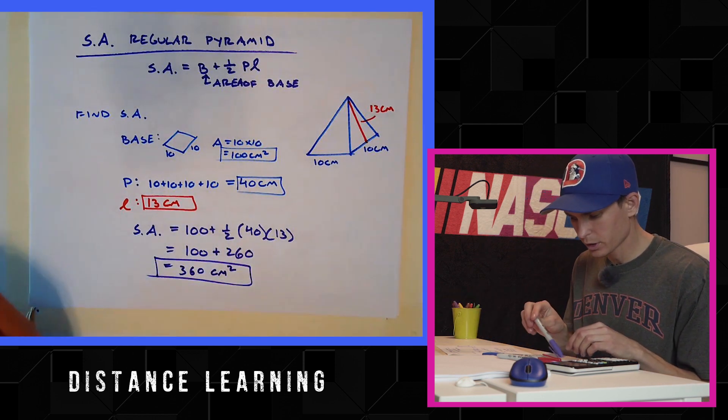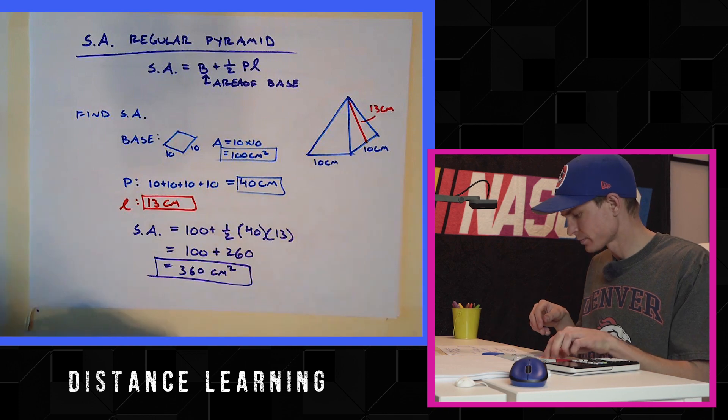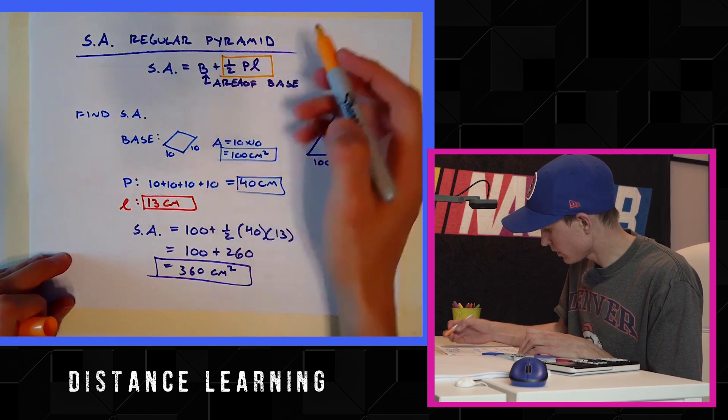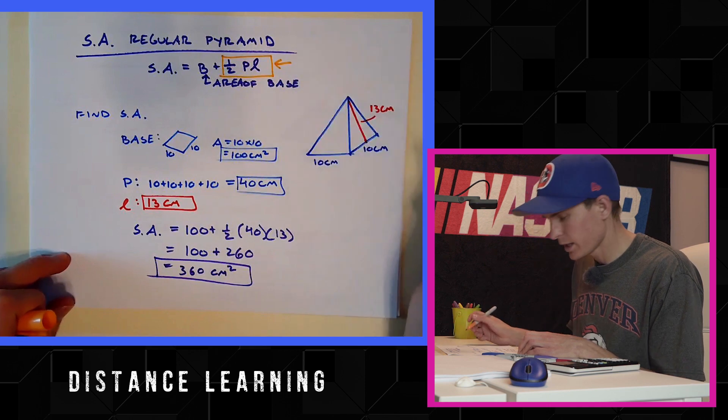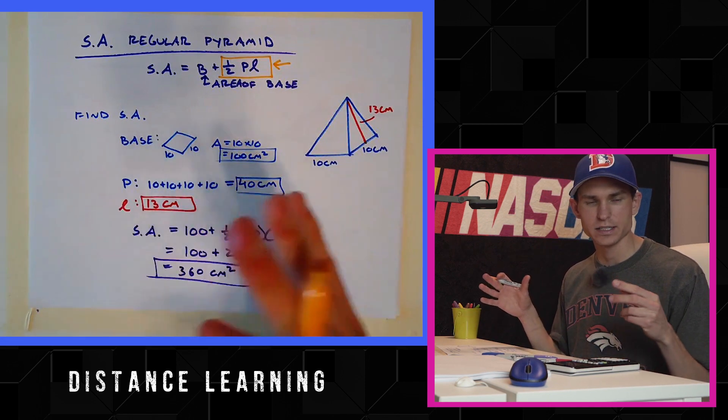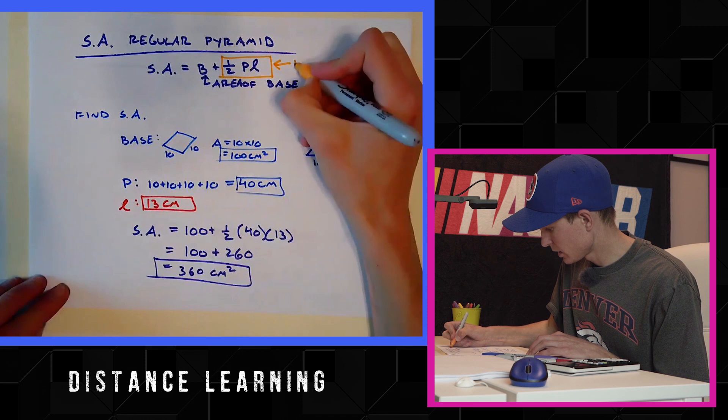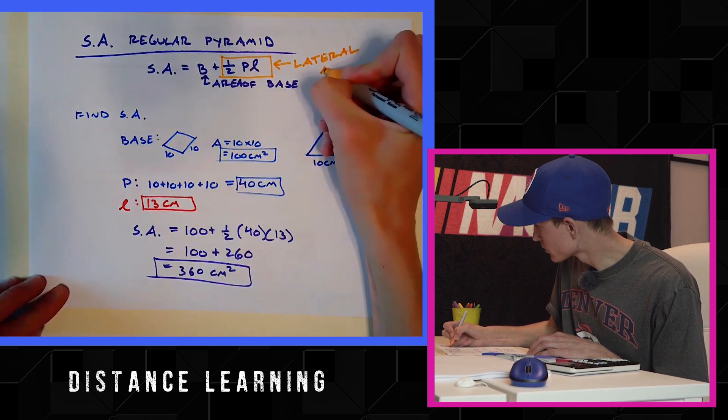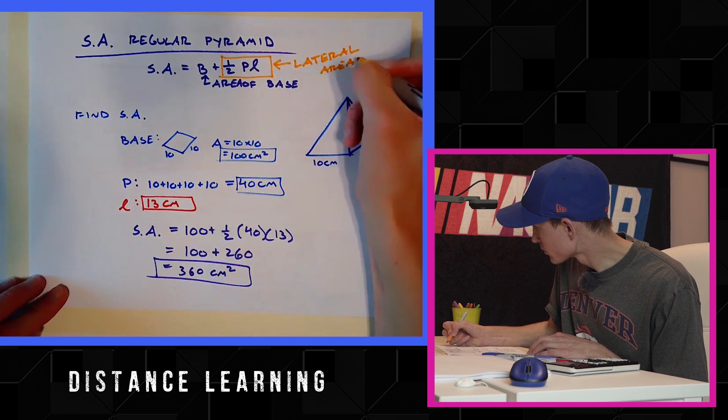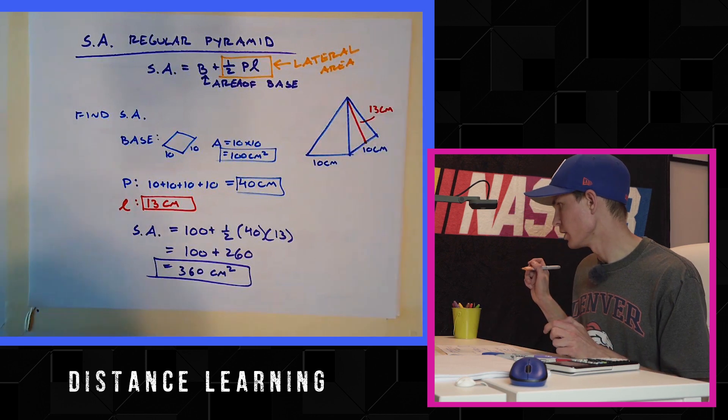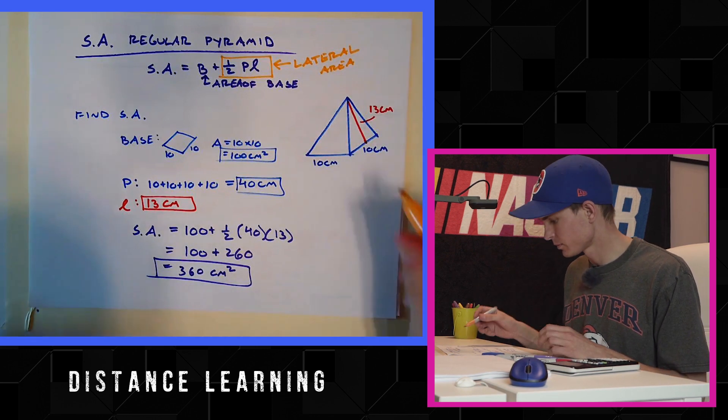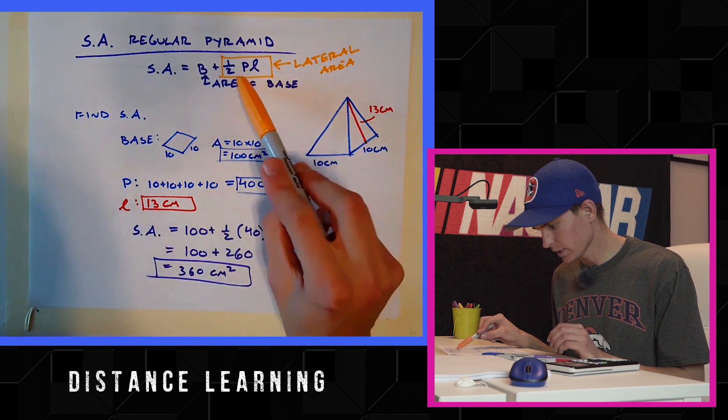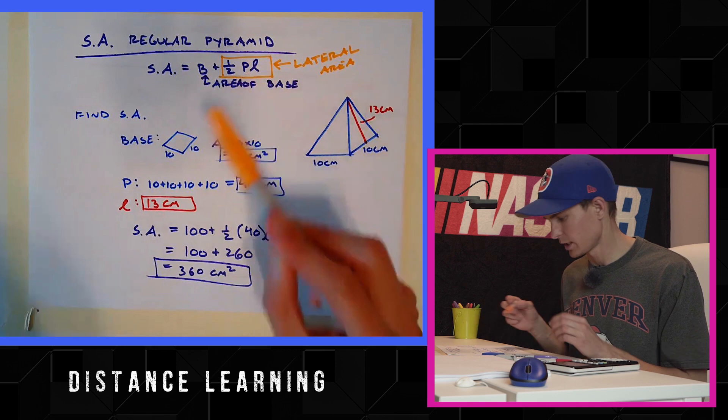Just for your recollection, similar to what we had yesterday, anytime you have the area of something that is not including the base, it is called the lateral area. All right, so the lateral area, if they ask for that ever, it's just one half times perimeter times the slant height.